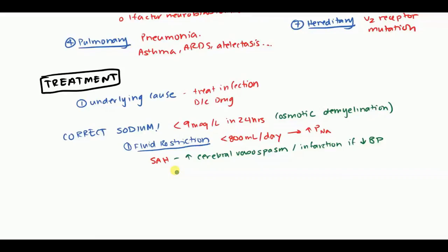Also, you want to keep in mind that if they have cerebral wasting syndrome, they're wasting a lot of sodium already, and ADH is a secondary reason for the wasted sodium. Therefore, in patients with subarachnoid hemorrhage, there is no fluid restriction. So be very careful when you see that.